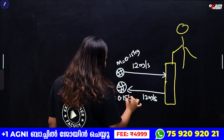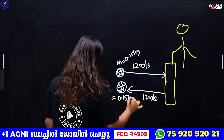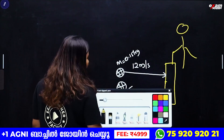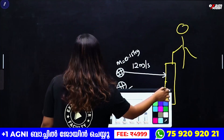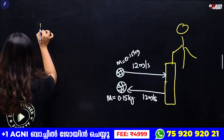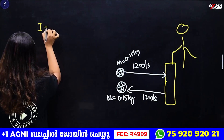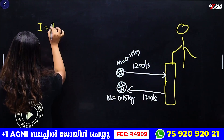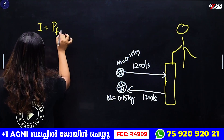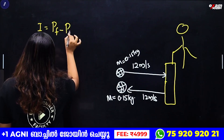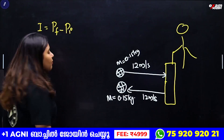The mass of the ball is 0.15 kg. We calculate impulse as change in momentum, which equals final momentum minus initial momentum.